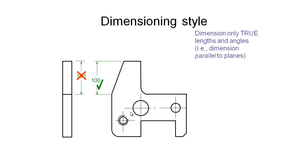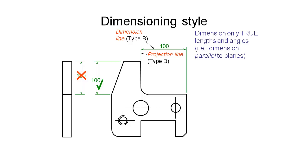Let's put a correct dimension on the drawing and talk about the style used. I've added a 100 millimeter dimension to represent the distance between this face and this face. The dimension line that our dimension sits on is a Type B line — one of our half-weight, slightly lighter lines. We also have projection lines that go from the end of our arrowheads and project down toward the object so we know what we're measuring, and these are also half-weight Type B lines.